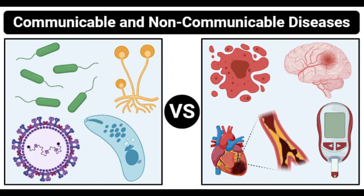Examples of communicable diseases include typhoid, cholera, malaria, tuberculosis, and leprosy. Examples of non-communicable diseases include cancer, diabetes, Alzheimer's disease, Down syndrome, and kwashiorkor.